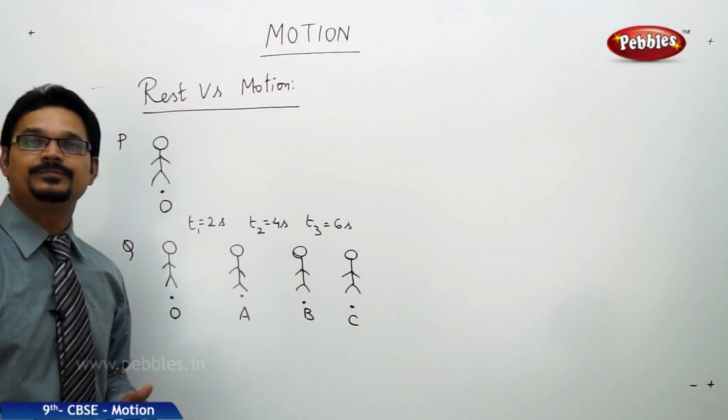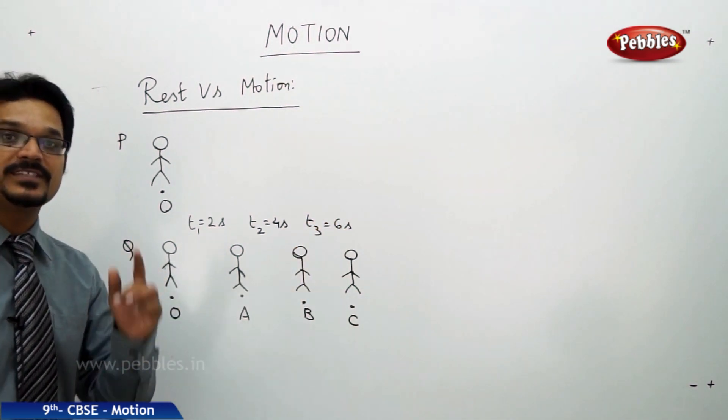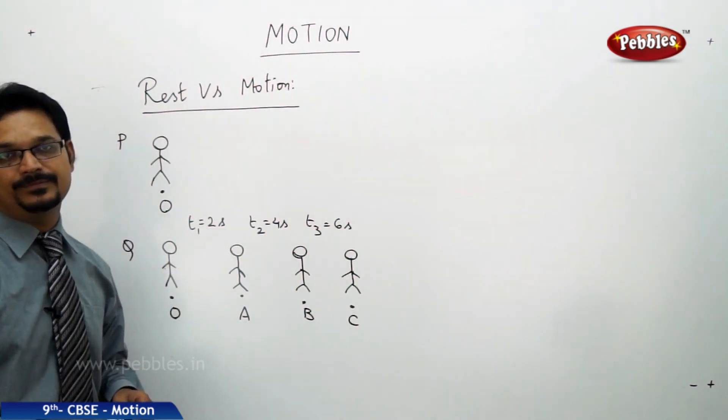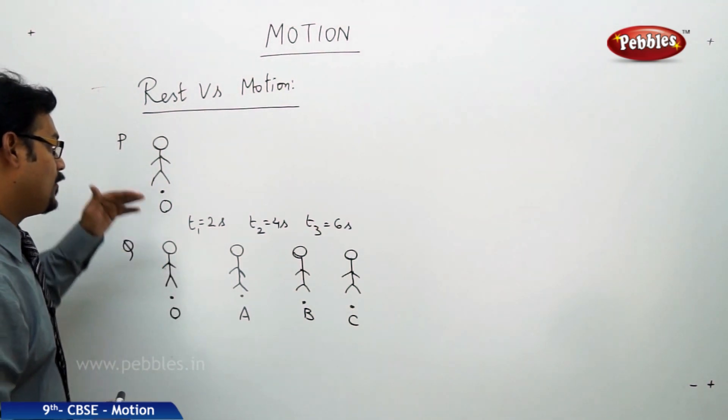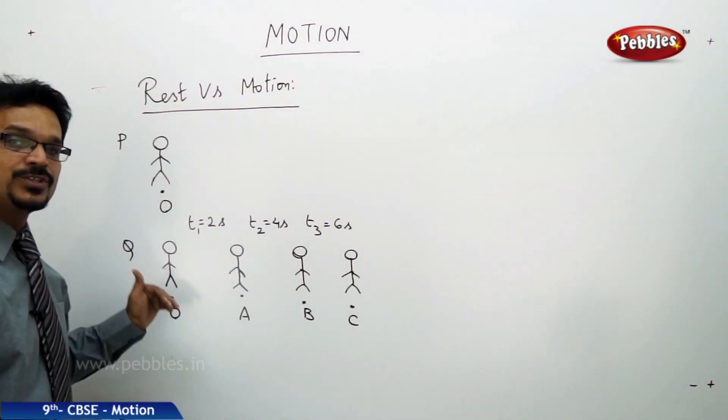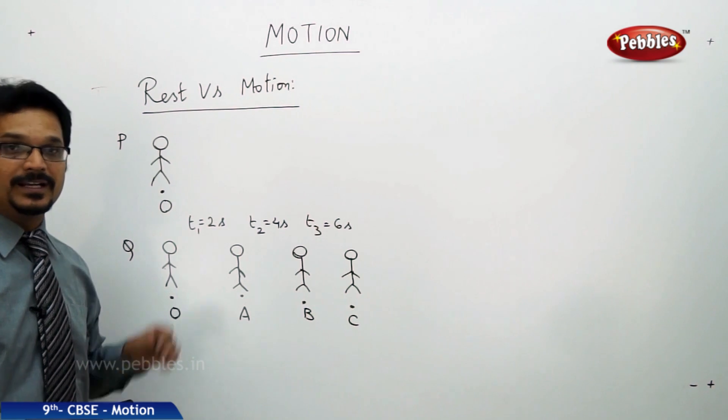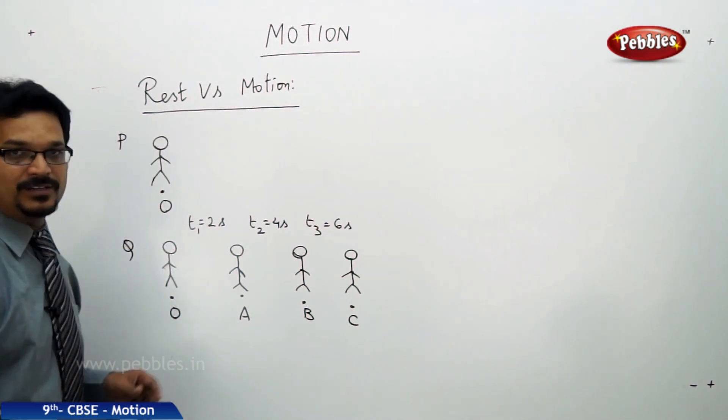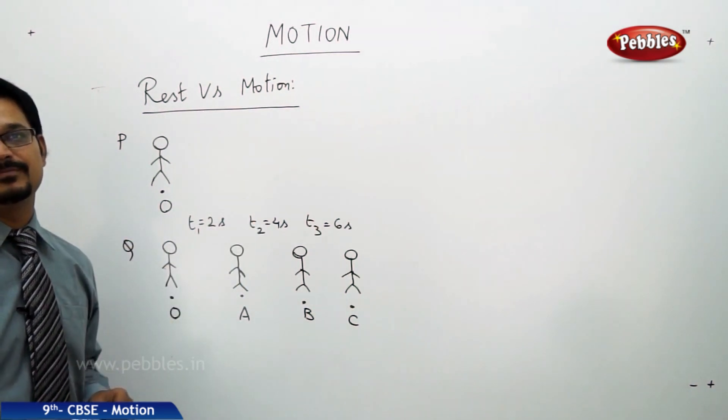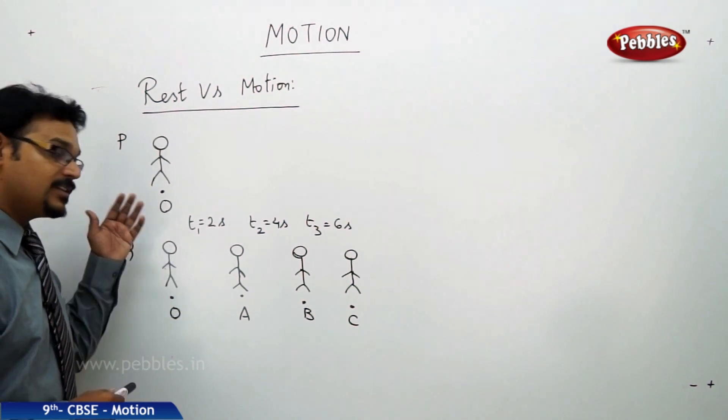So the difference between rest and motion is: rest means if any body doesn't change its location with respect to time, then it's called rest. Let me write here: body does not change its location with time, then it is rest.